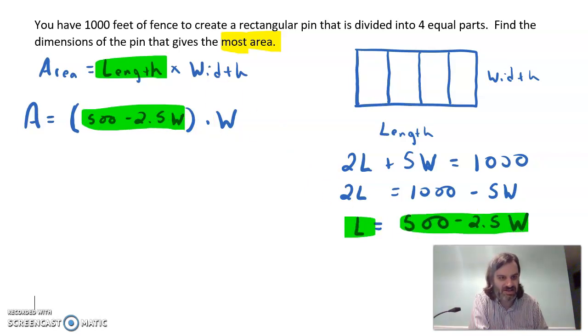Okay, so we're going to clean that up. We'll distribute. So area is a function of width, but we'll have it and I'll rearrange it. We'll multiply the W times the negative 2.5W. So I'll have negative 2.5W squared. And then W times 500 would be plus 500W.